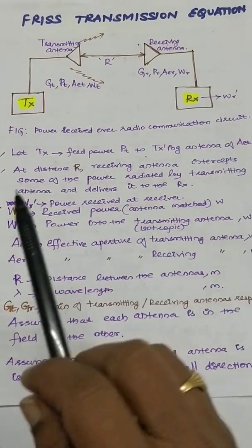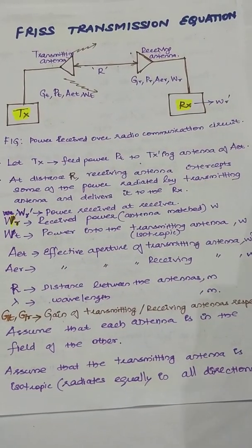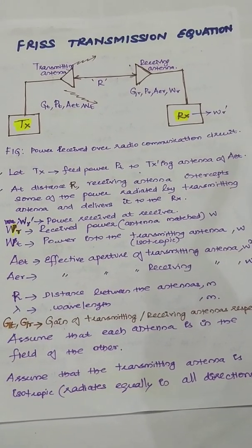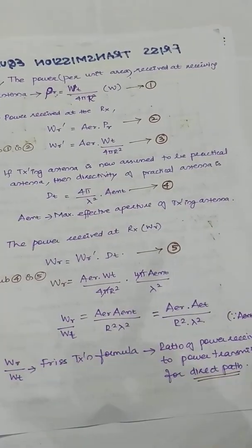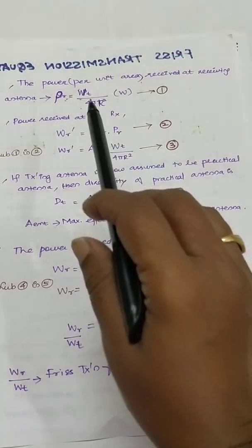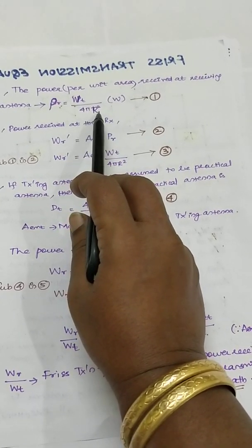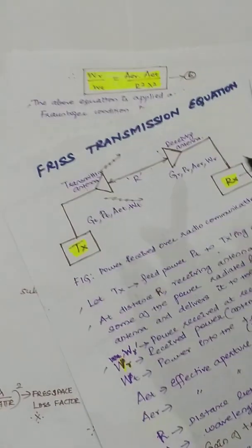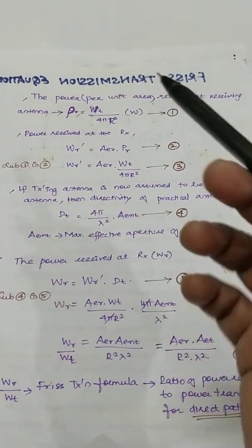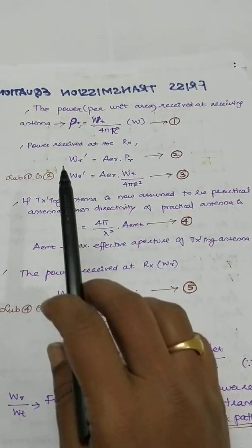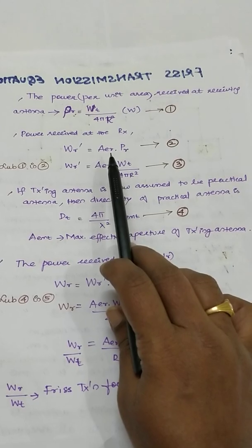Initially, we assume that each antenna is in the far field of the other. If the transmitting antenna is isotropic — meaning it radiates equally in all directions, as with the sun for example — the power density PR at the receiving antenna is defined as WT divided by 4πR², where 4πR² is the surface area. The power received WR' is then the product of the effective aperture of the receiving antenna AER and PR.